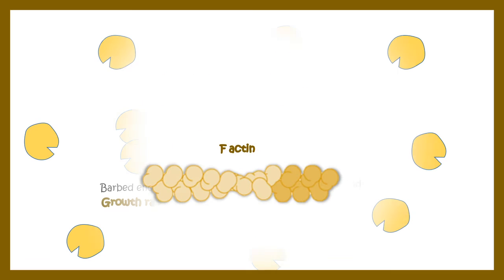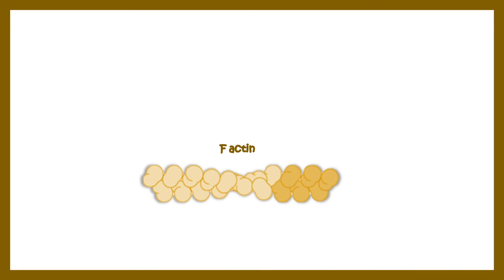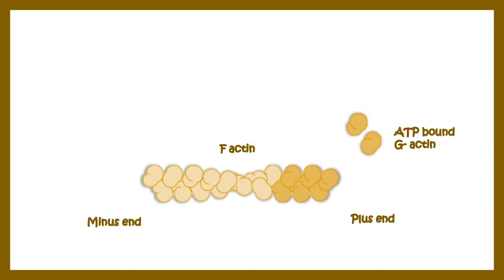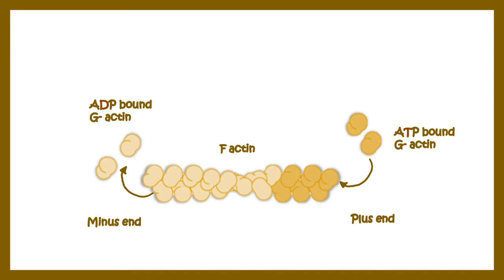The microfilament is a polar structure with a plus end and a minus end. At the plus end, ATP-bound G-actin gets recruited, and at the minus end, ADP-bound G-actin gets dissociated. So ATP-bound G-actin recruitment is important for the polymerization step.